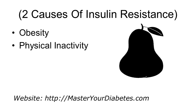Obesity is a big one, right along with insulin resistance. People who are insulin resistant usually have a pear body shape, with fat around the midsection. This fat around the midsection is a predictor of insulin resistance, which is the first thing to develop before type 2 diabetes occurs.